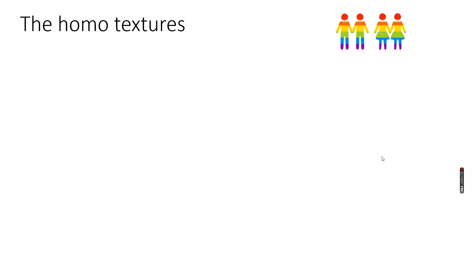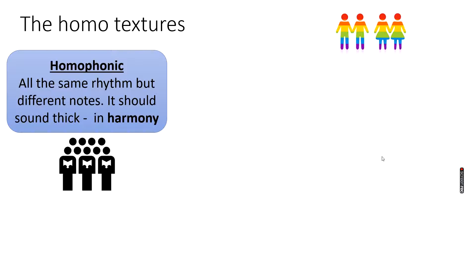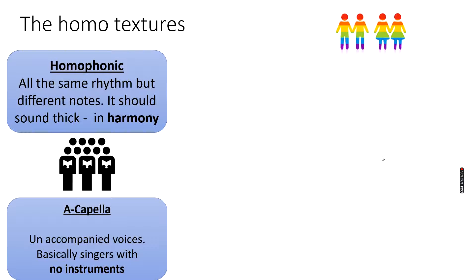For homophonic textures, the basic one is where we have the same rhythm but different notes — so they sound in harmony, quite thick. Imagine a choir like I played at the beginning of this session. A cappella links with this because maybe you have unaccompanied voices — singers with no instruments. This is also classed as a homophonic texture. No instruments are allowed, just voices.